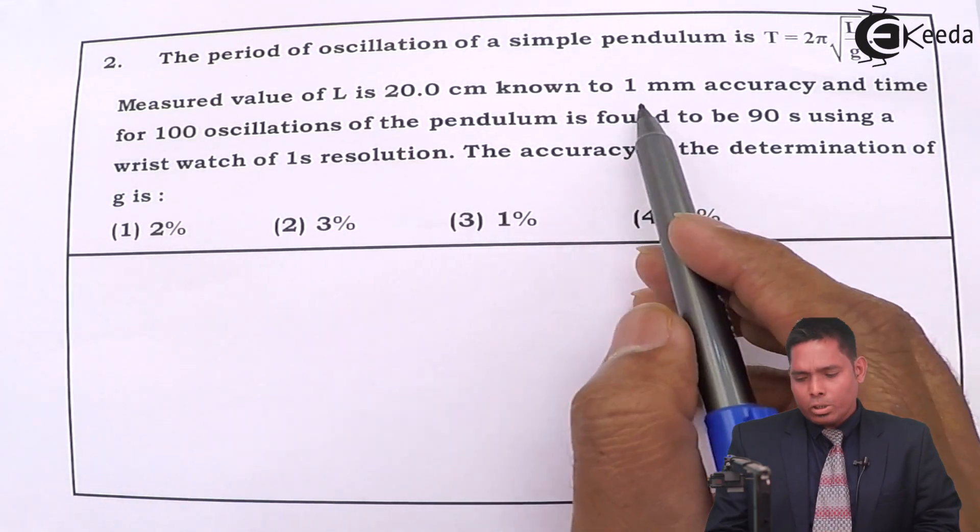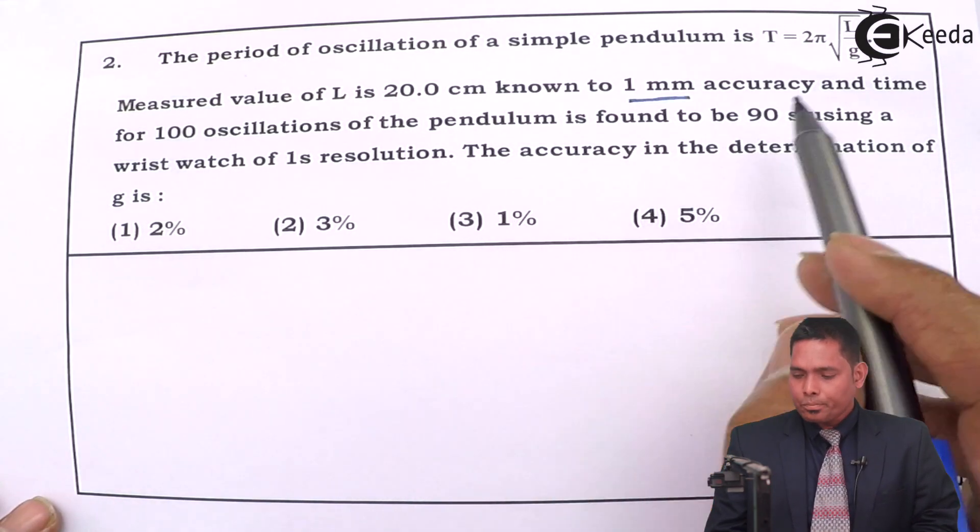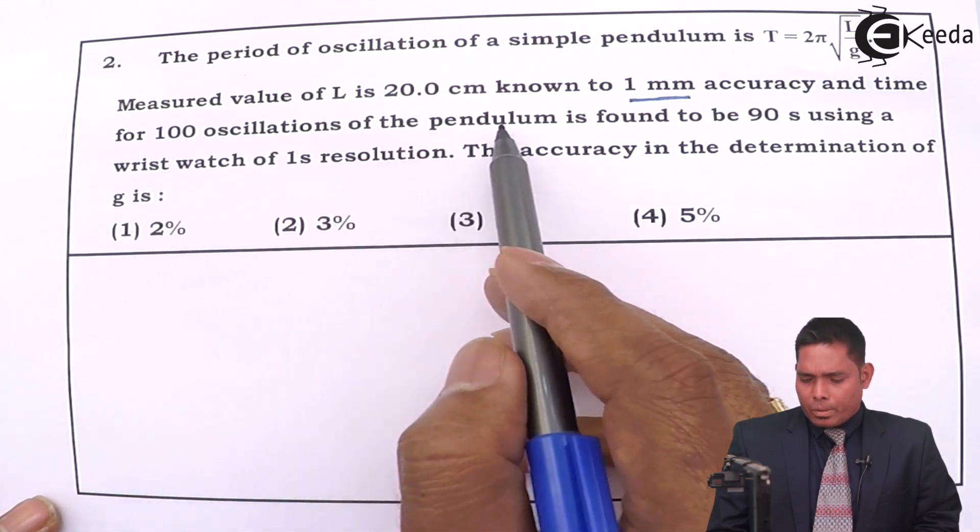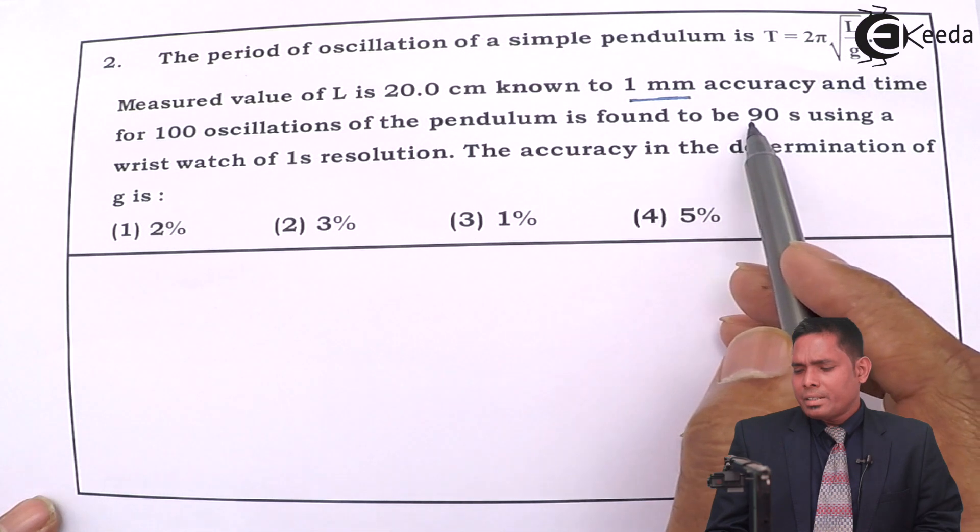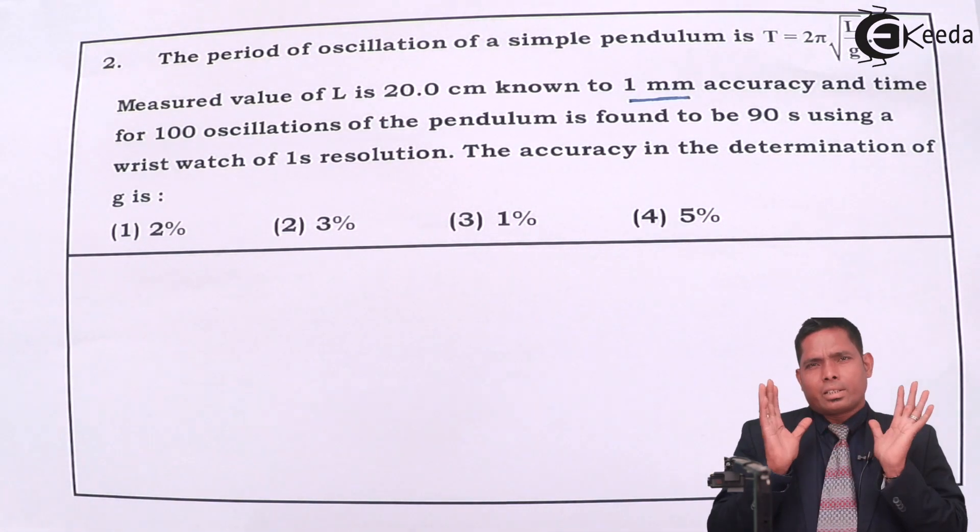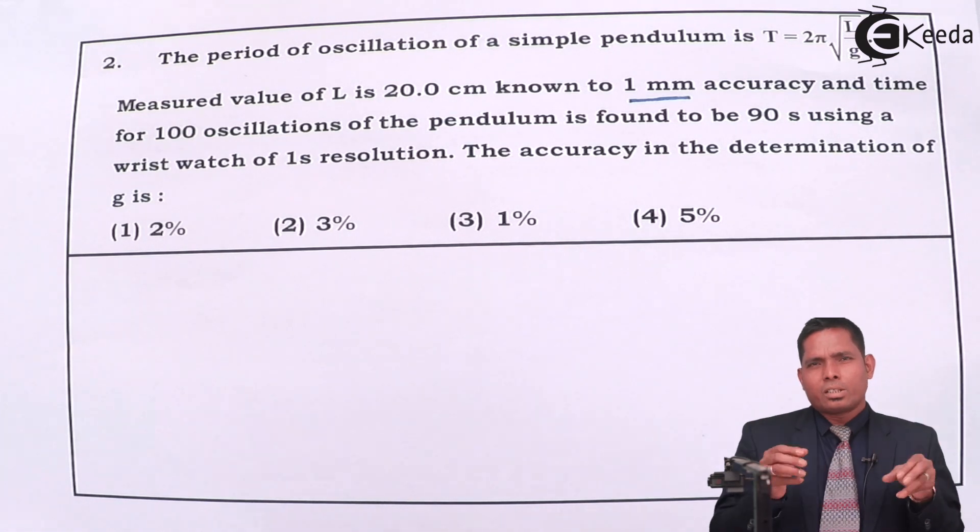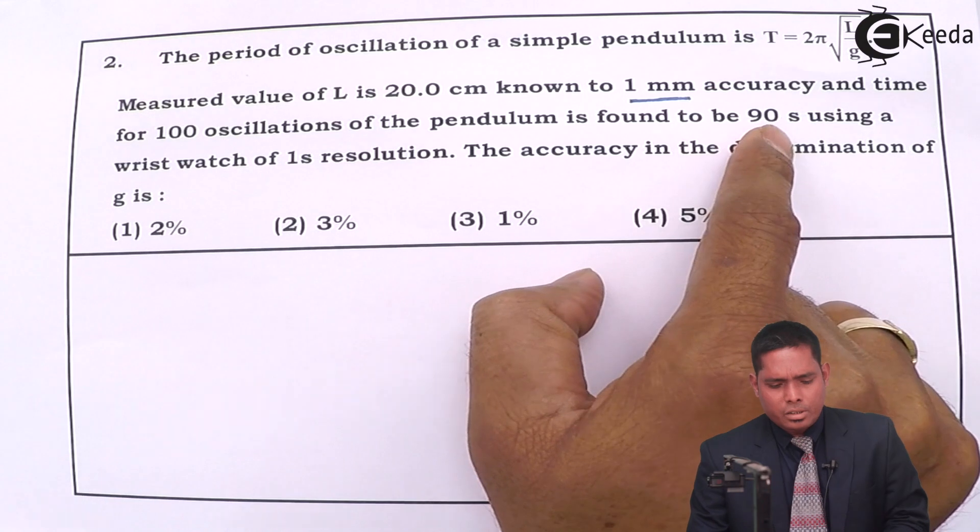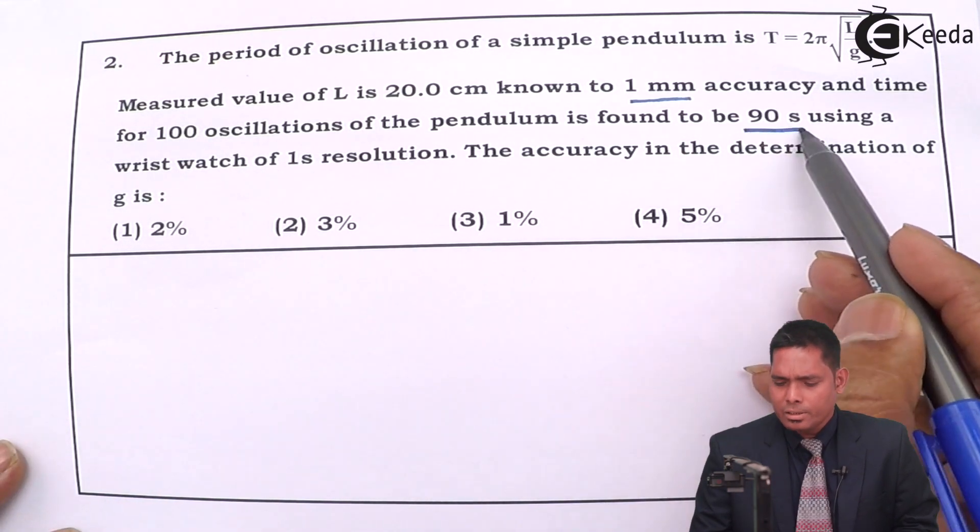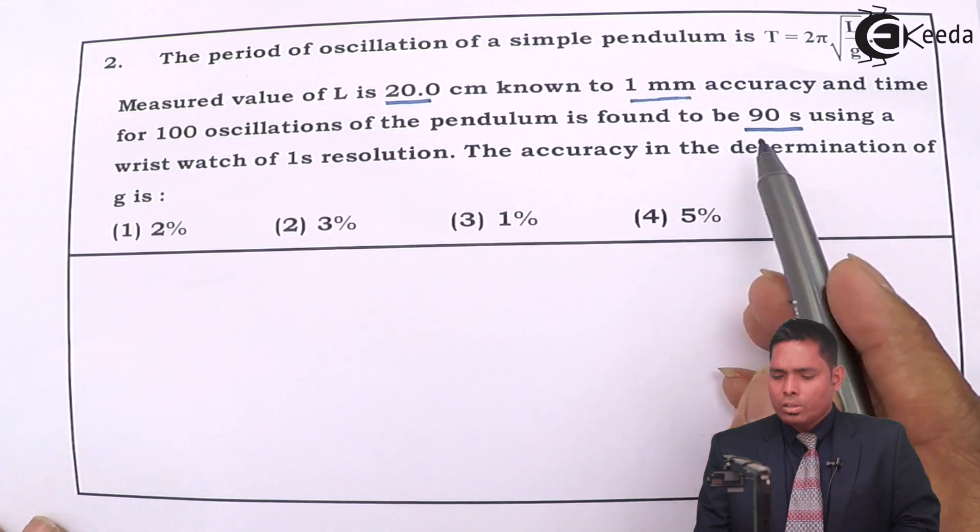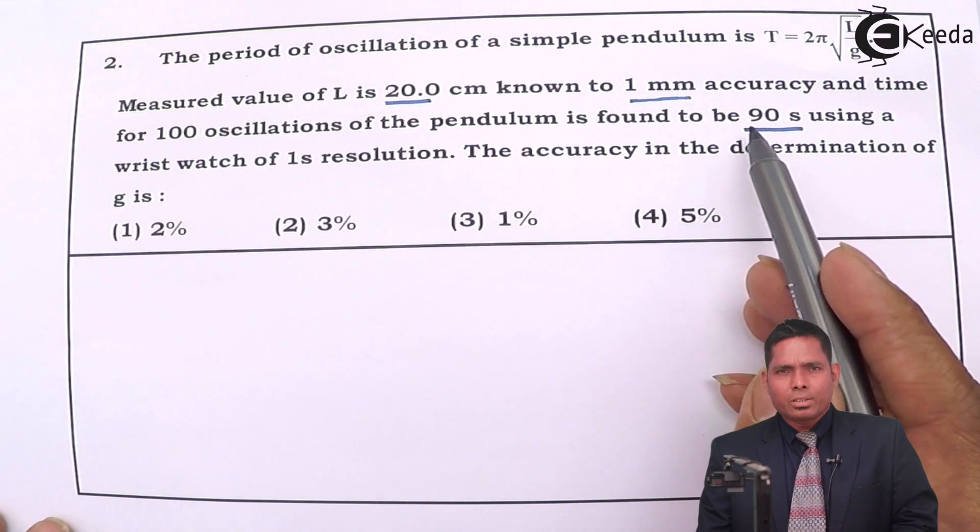Time for 100 oscillations of the pendulum is found to be 90 seconds. So the time it measures is 90 seconds—whether 100 oscillations or two oscillations, it doesn't matter. It measures 90 seconds. The time that is measured is 90 seconds, this is the time that is measured, using a wristwatch.